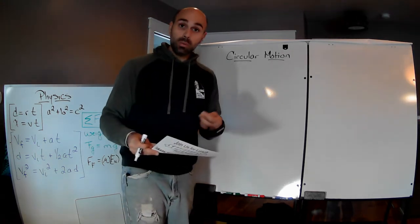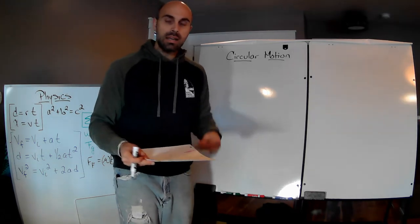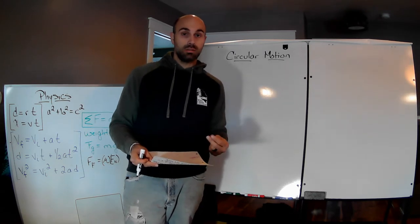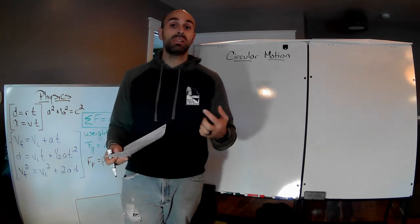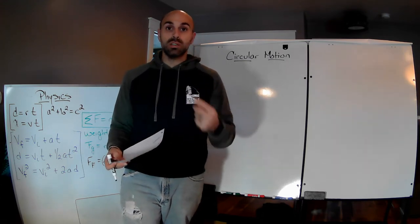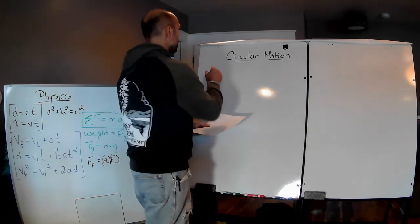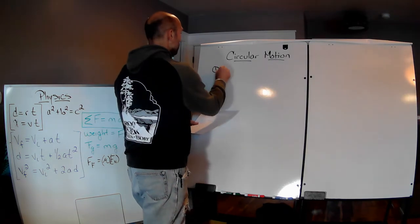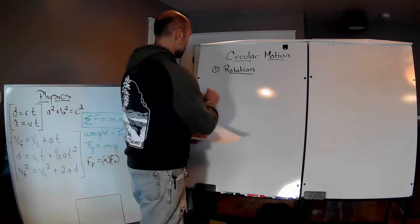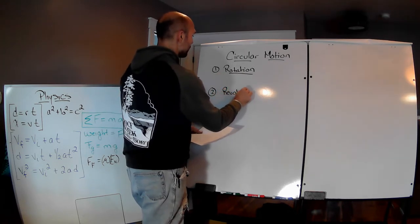Before we talk about any type of equations, we need to get some terminology down. When we are discussing circular motion — think for example planets, or the circular motion of the engine in your car — we're talking about two main terms: number one, Rotation, and number two, Revolution.